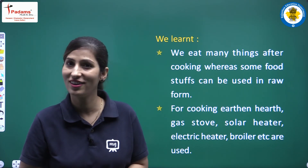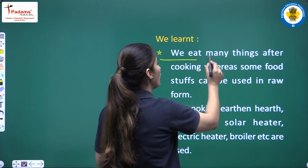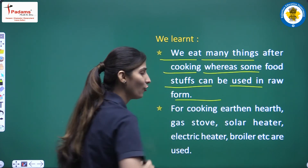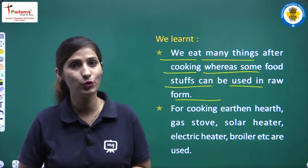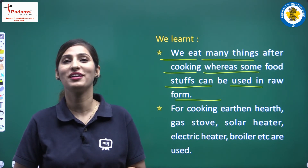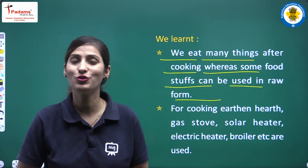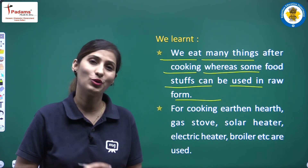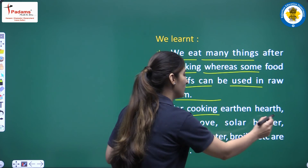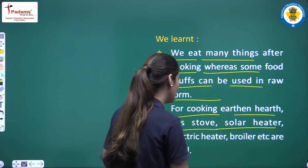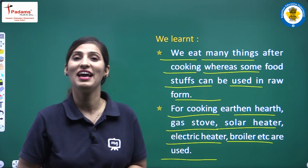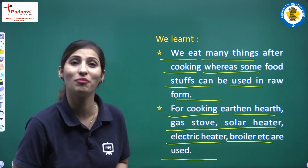Now let's see what we have learnt in this chapter. We eat many things after cooking, whereas some foodstuffs can be used in raw form, and some can be eaten both ways. For cooking, different stoves are used — earthen stove, gas stove, solar heater, electric heater, broiler, etc. — and each uses a different fuel.